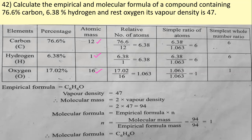When we divide by the least value, we get 6 for carbon, 6 for hydrogen, and 1 for oxygen. So the simplest whole number ratio is 6:6:1. The empirical formula is therefore C₆H₆O.